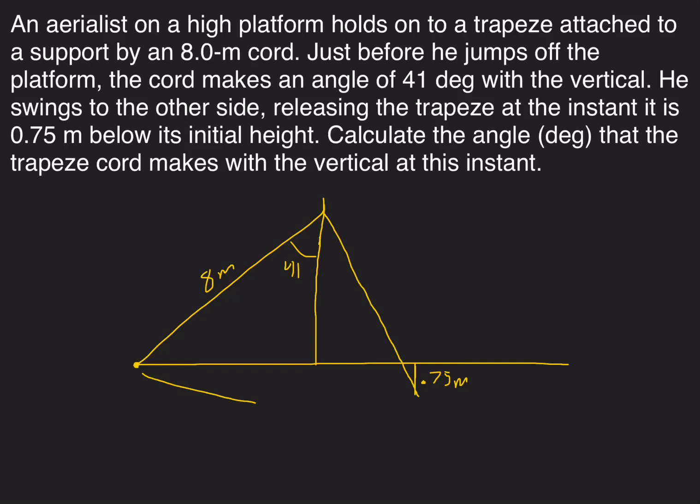From here down all the way down to here is still eight meters, because that's still the length of the cord. It just hasn't swung all the way up to this original height yet. What we want to do is figure out what is this angle from the vertical at which point that is happening.